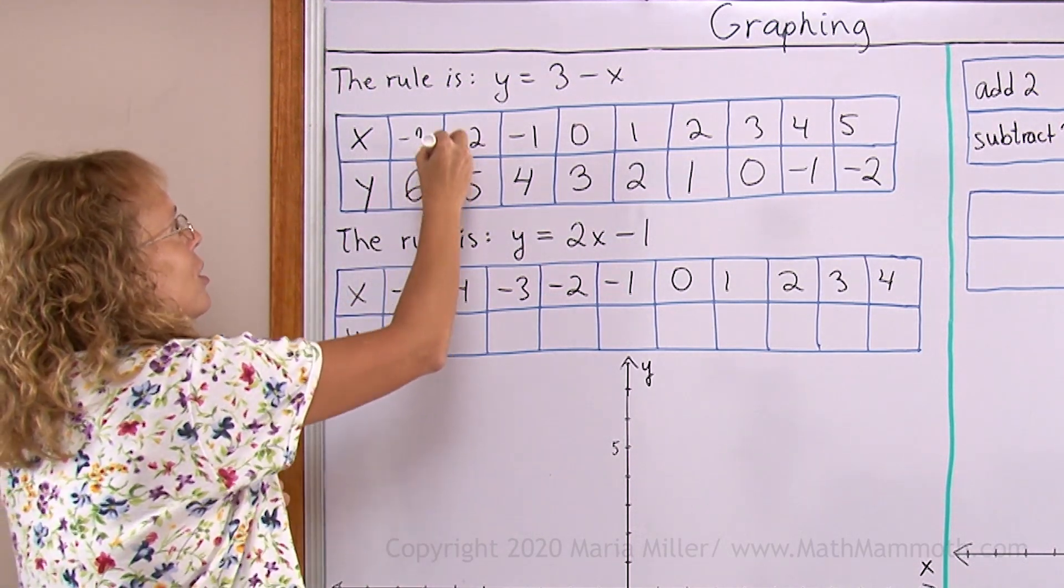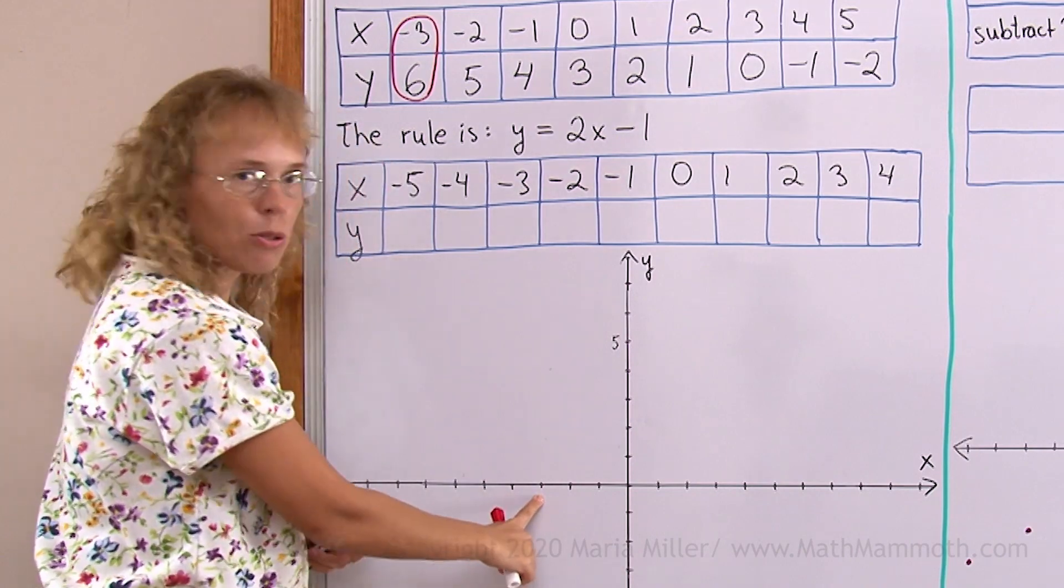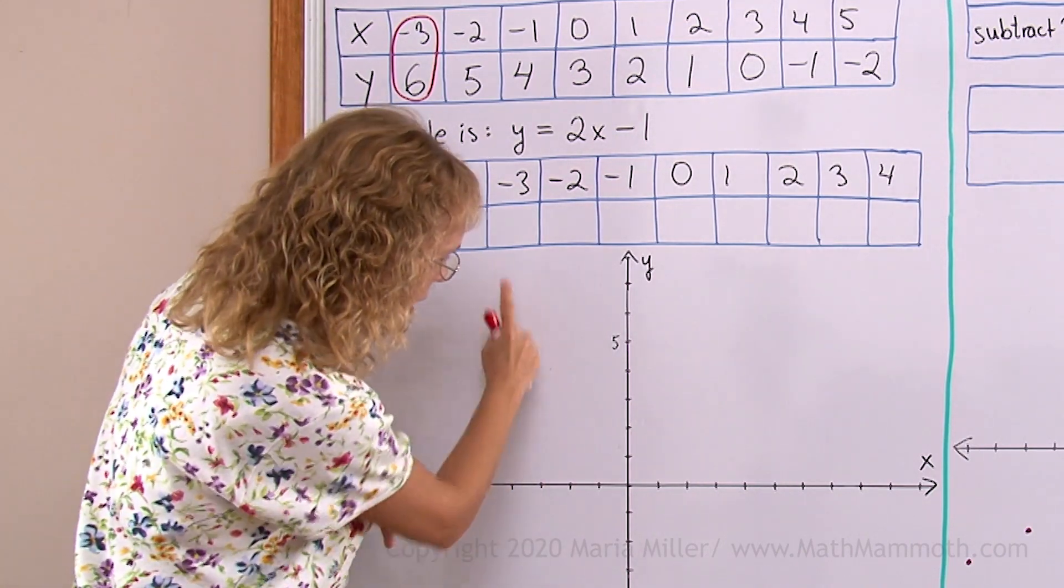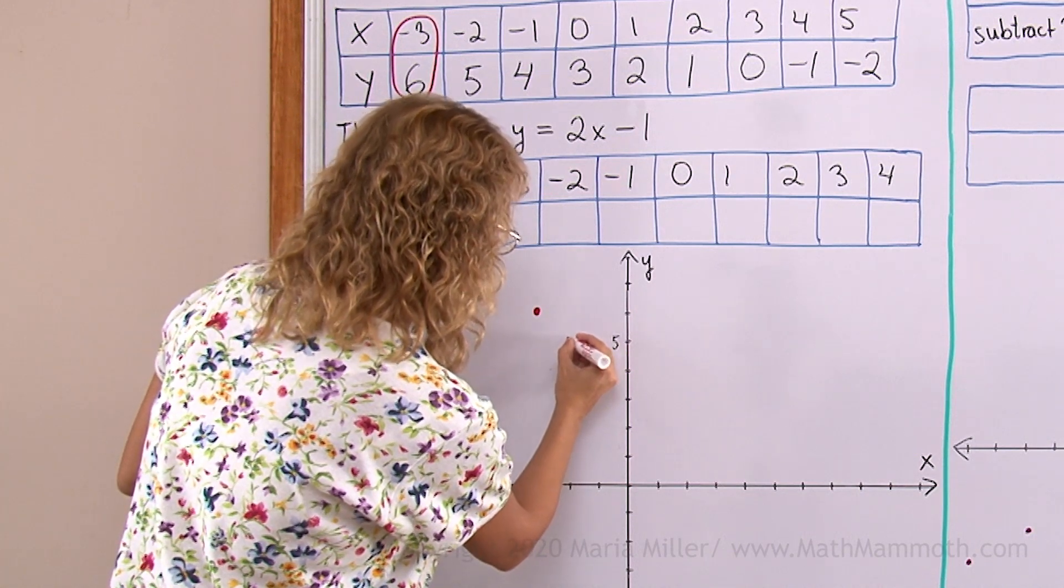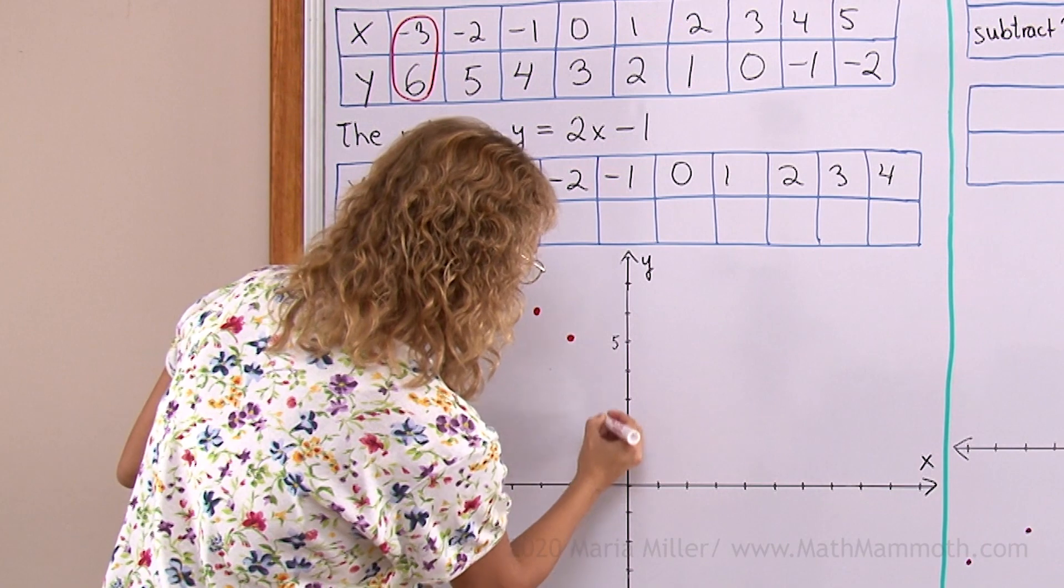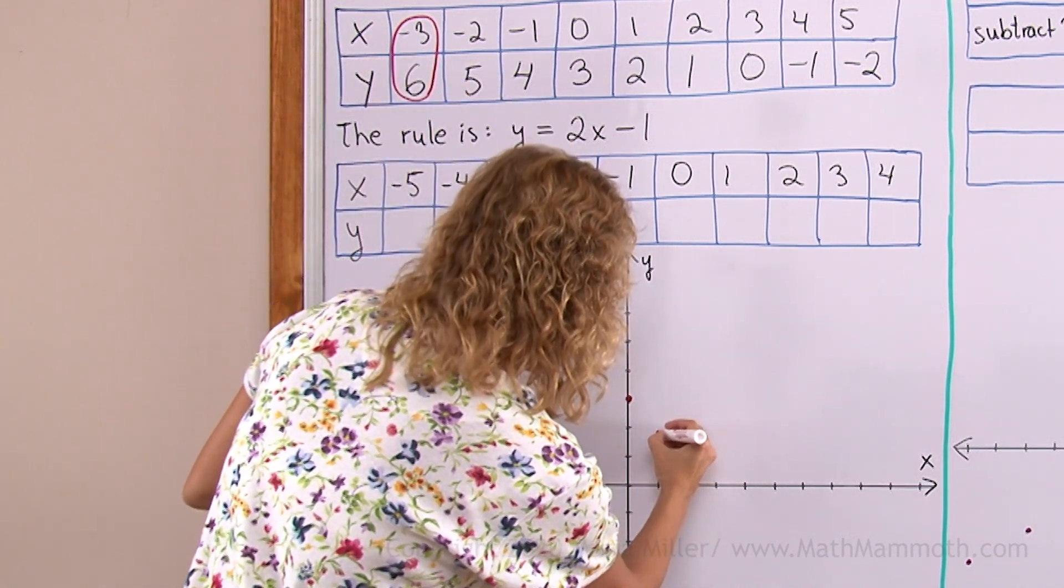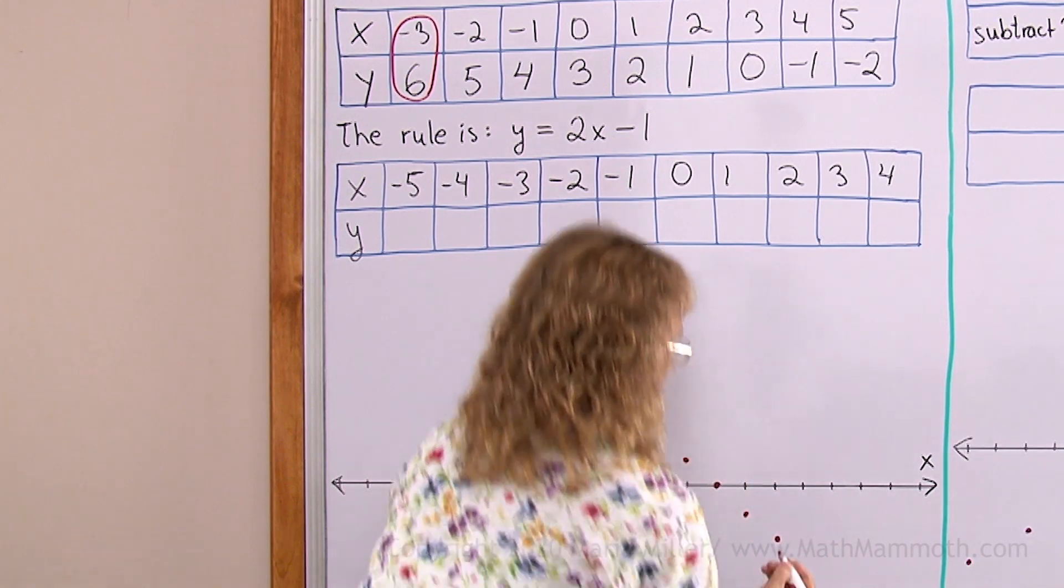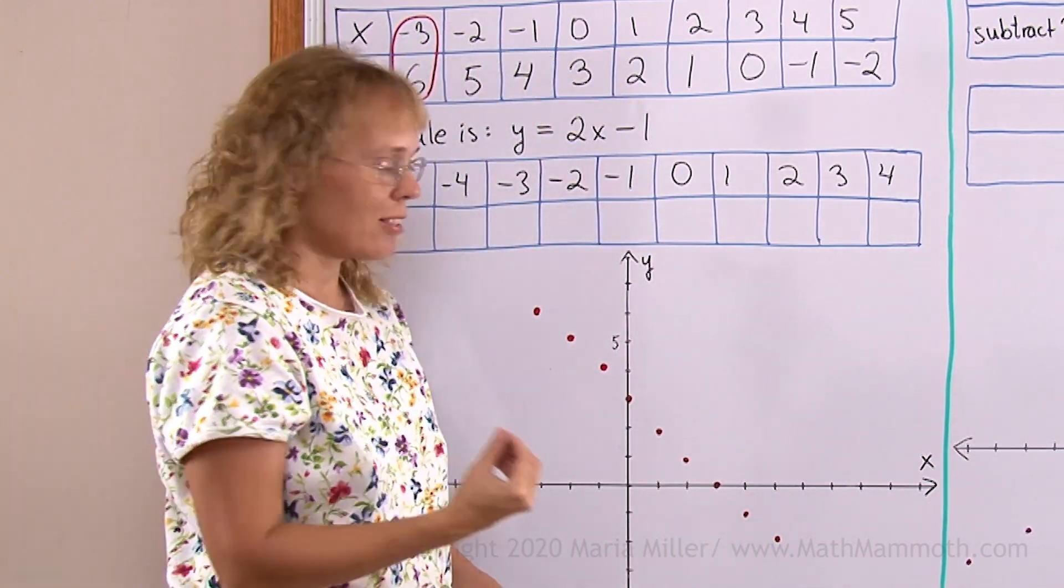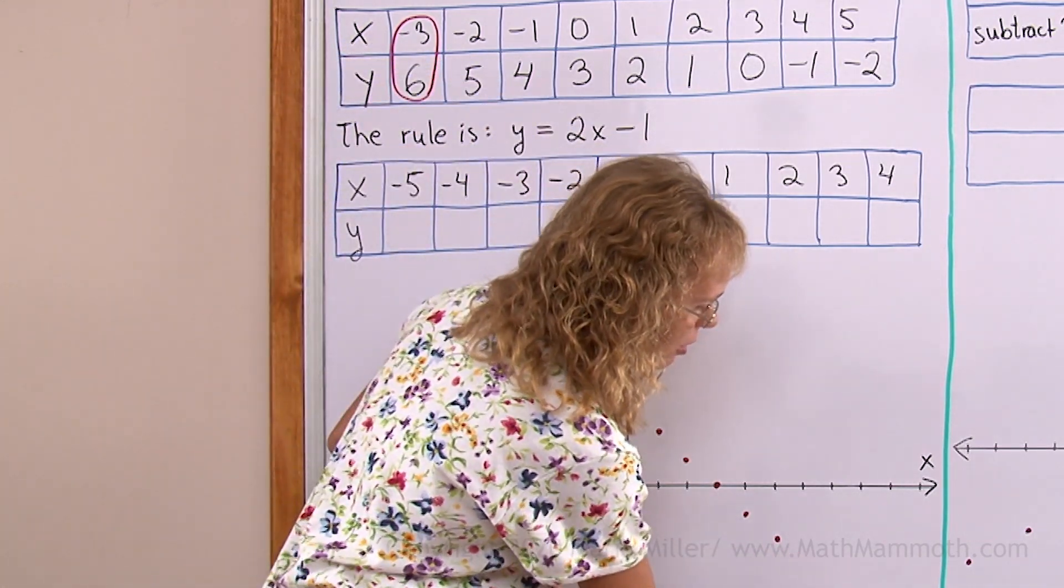Now we're ready to plot these points. Remember, each number pair is one point. Its coordinates are given. So let's start with x is minus 3. I go here 1, 2, 3. I go to negative 3 on the x-axis and then y is 6, so I go 6 units up. The next point is x is negative 2 and y is 5, just one less. And then x is negative 1 and y is 4. And then x is 0, y is 3. x is 1, y is 2. They make a nice pattern here, a linear pattern. A linear pattern because they look like they are on a line. The word linear comes from the word line. And as you can see, we could continue the pattern.